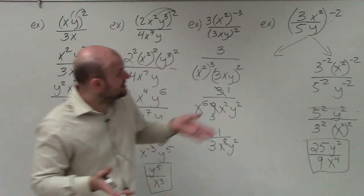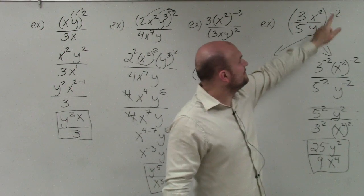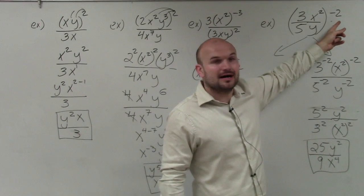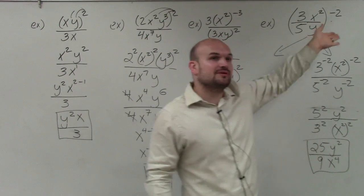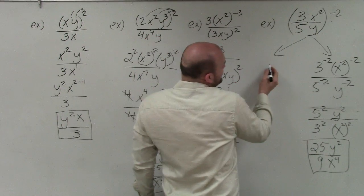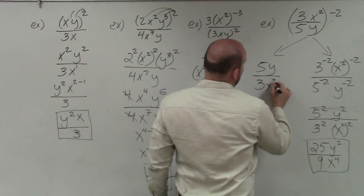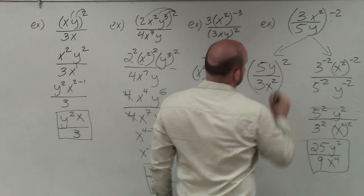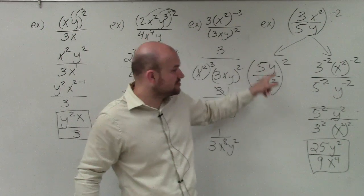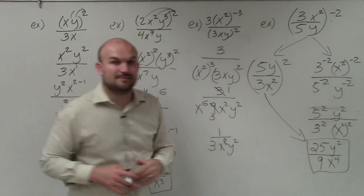The other way to do this is to make the exponent positive beforehand by rewriting as a reciprocal. Since we already have a fraction, we just flip the numerator and denominator, which makes the power positive. Then I would again use the power to product and power to quotient rules to distribute the two. You would see that you get the exact same answer either way.